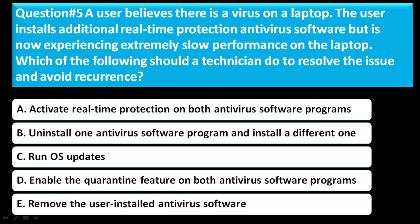Question number 5: A user believes there is a virus on a laptop. The user installs additional real-time protection antivirus software but is now experiencing extremely slow performance. Which of the following should a technician do to resolve the issue and avoid recurrence? Option A is activate real-time protection on both antivirus programs, Option B is uninstall one and install a different one, Option C is run OS updates, Option D is enable the quarantine feature on both, Option E is remove the user-installed antivirus software. The correct answer is E — remove the user-installed antivirus software.